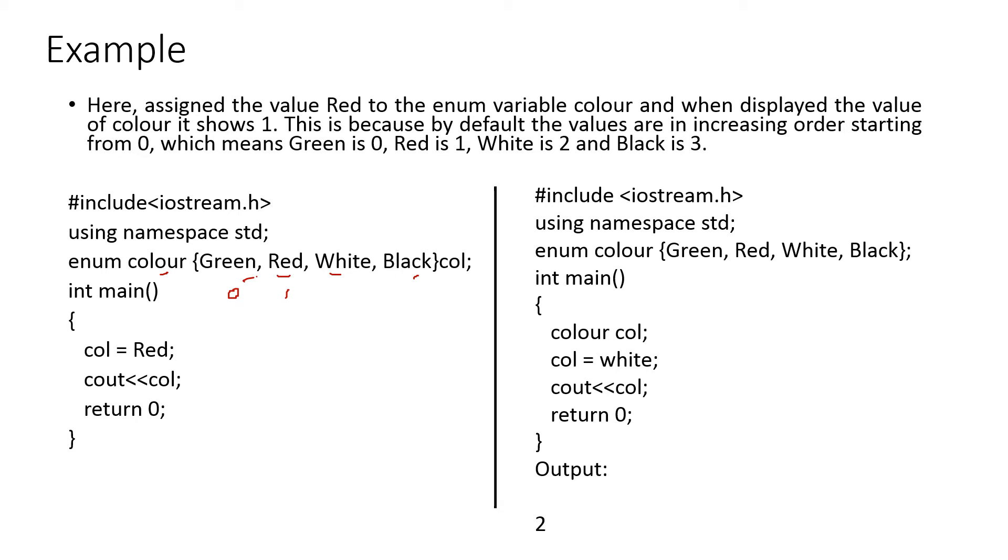That is the default. If no particular values are given, automatically it will take the first value as zero and it goes on increasing. And this is the representation, col. So, col is equal to red. Cout col. It will print the answer as one.